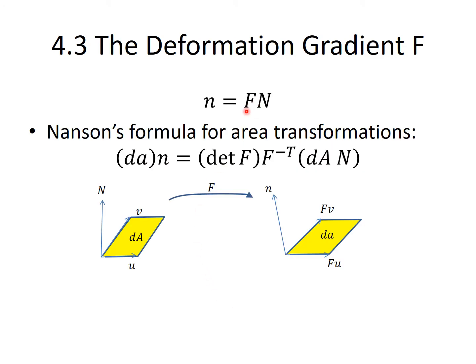The deformation gradient F contains all the required information to locally describe how vectors change their length and direction, and using Nanson's formula it also describes how areas change their magnitude and orientation. Recall that given an area vector with magnitude dA and direction capital N in the reference configuration, after a transformation F the new area vector with magnitude small dA and direction n is equal to the determinant of F multiplied by F negative transpose applied to the area vector in the reference configuration.